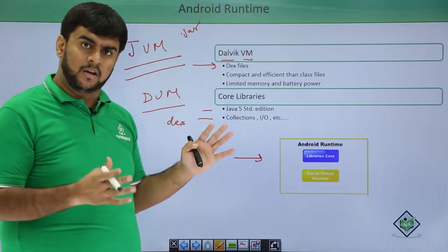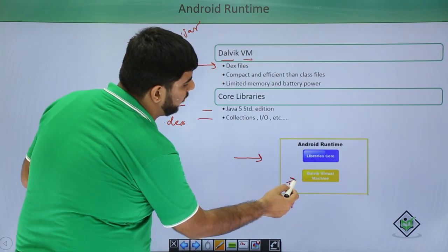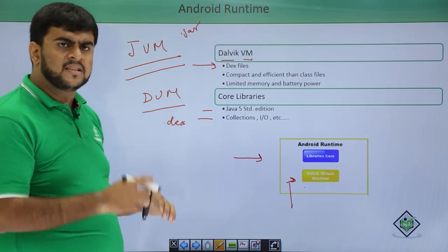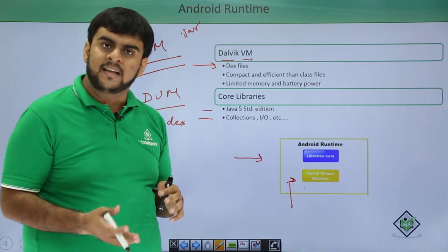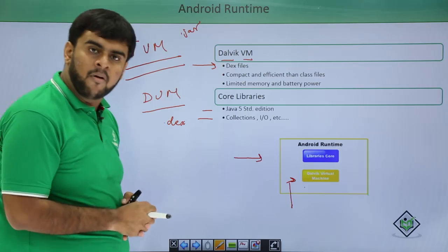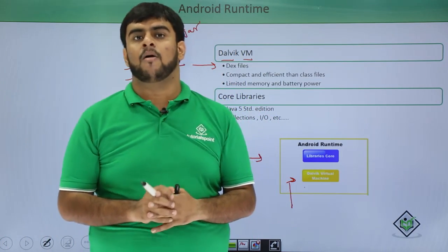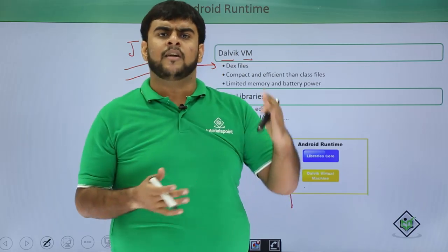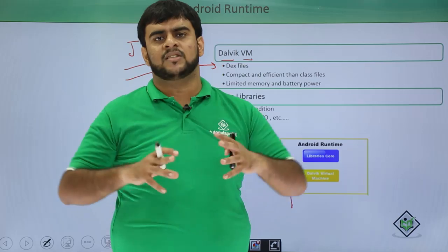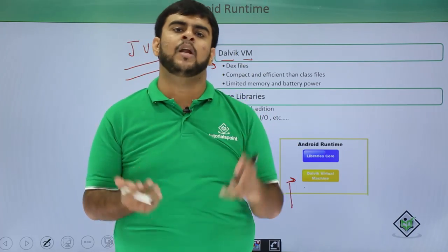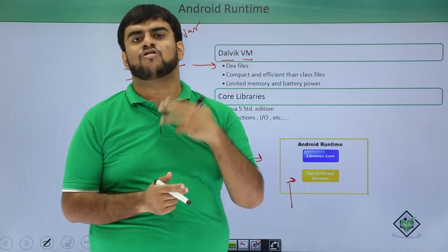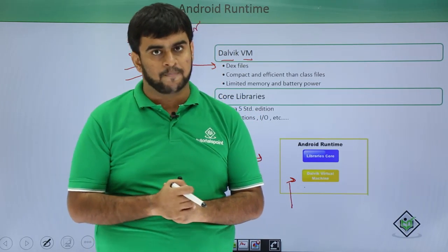To sum it up: the Dalvik Virtual Machine plus the core libraries form the Android Runtime. The DVM uses .dex files that are more efficient than class files. So to conclude, Android follows a four main layer architecture with the Runtime as the fifth component. This architecture makes application development much easier from a developer's perspective. Stay tuned as we will be taking you through the installation of Android on your local machines. Thank you.